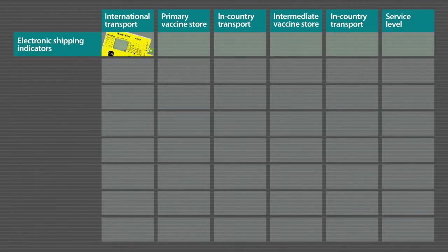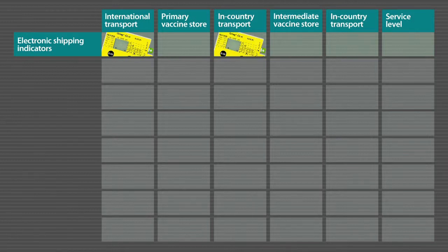Electronic shipping indicators are used to monitor temperatures during international shipments. In some cases, where a country has a vast population and land, they may also be used in distribution from the primary vaccine store to an intermediate vaccine store level.